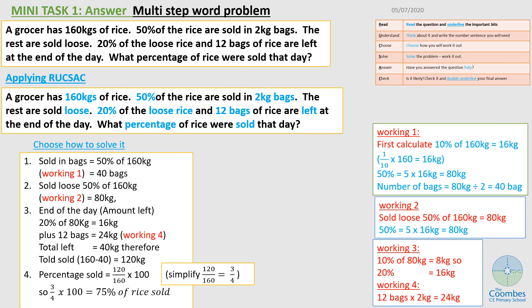So how much was sold? Now the grocer started with 160 kg. And then 40 was left at the end of the day. So if I take how much was left from how much he started with, I'll see that he sold 120 kg of rice that day. The question says, what percentage of rice did he sell? I know the amount that was sold, 120 kg. And then the amount he started with 160 kg.